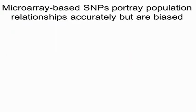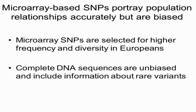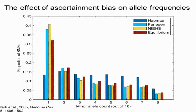Microarray-based SNPs do portray population relationships pretty accurately, but they are biased — they were typically selected for high frequency and diversity in Europeans. Complete DNA sequences are essentially unbiased and include a lot of information about not just common but also rare variants. A plot from Andy Clark shows the effect of that bias on allele counts. For the SNP-based HapMap results, there's a real deficiency relative to sequence data in low-frequency alleles. It's also interesting that compared to equilibrium, we see excess rare alleles in the sequence data — a signature of rapid human population growth fairly recently.